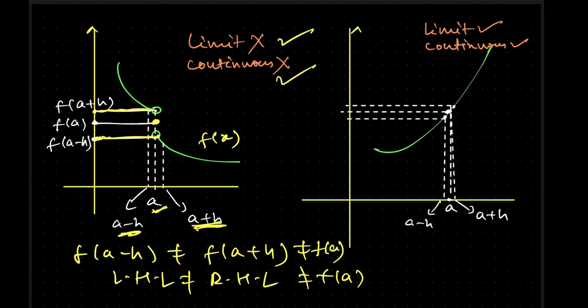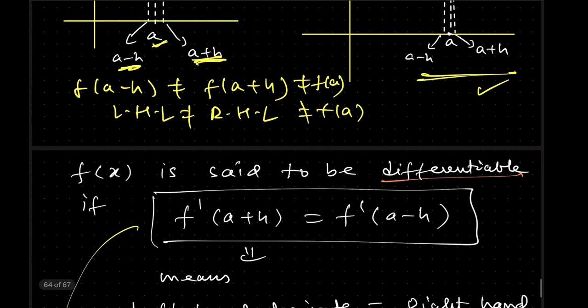Similarly, looking at this graph, you can see continuity. This is a continuous function and the limit also exists because at the left-hand side and right-hand side both values are almost equal and the points are merging. So here both limit and continuity exist.